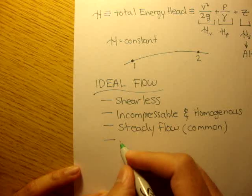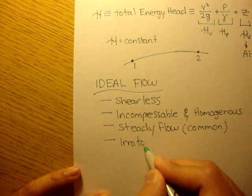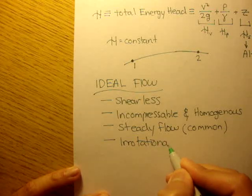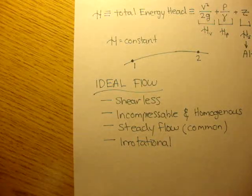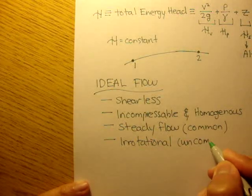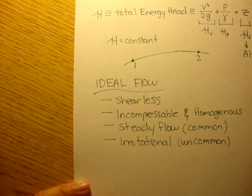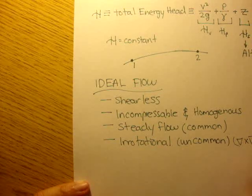And lastly, the flow must be irrotational. Irrotational, it shouldn't be rotating. This is pretty uncommon. Remember, irrotational is when del cross V is equal to zero.